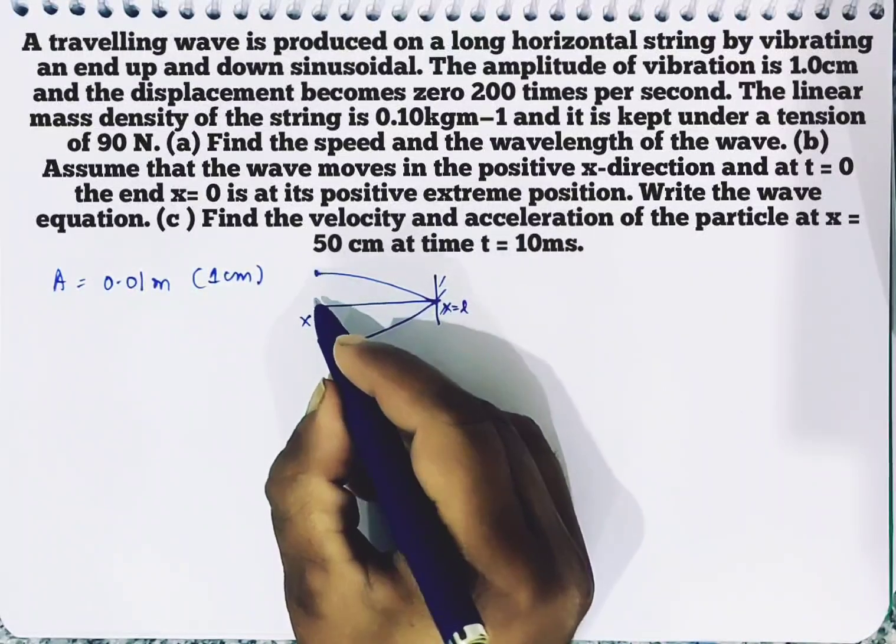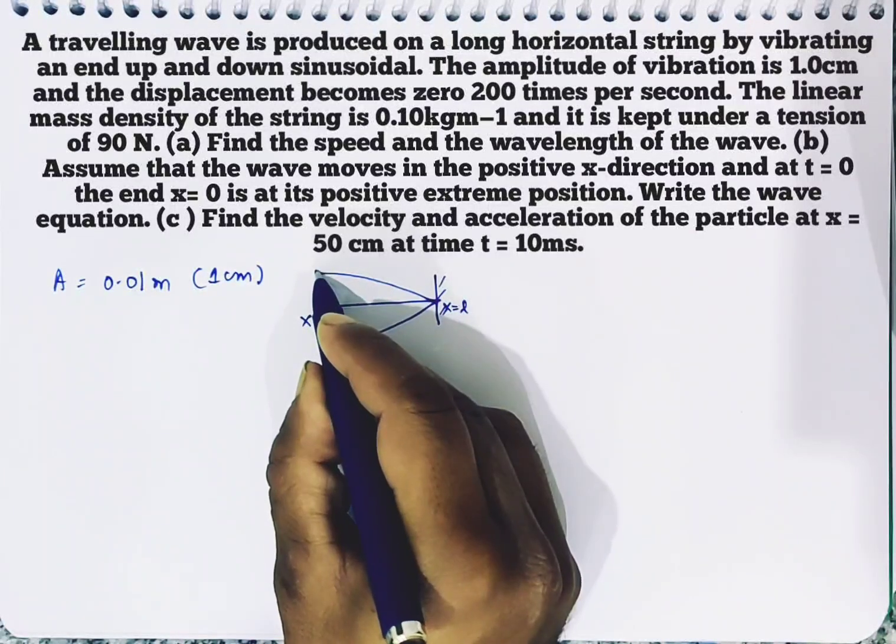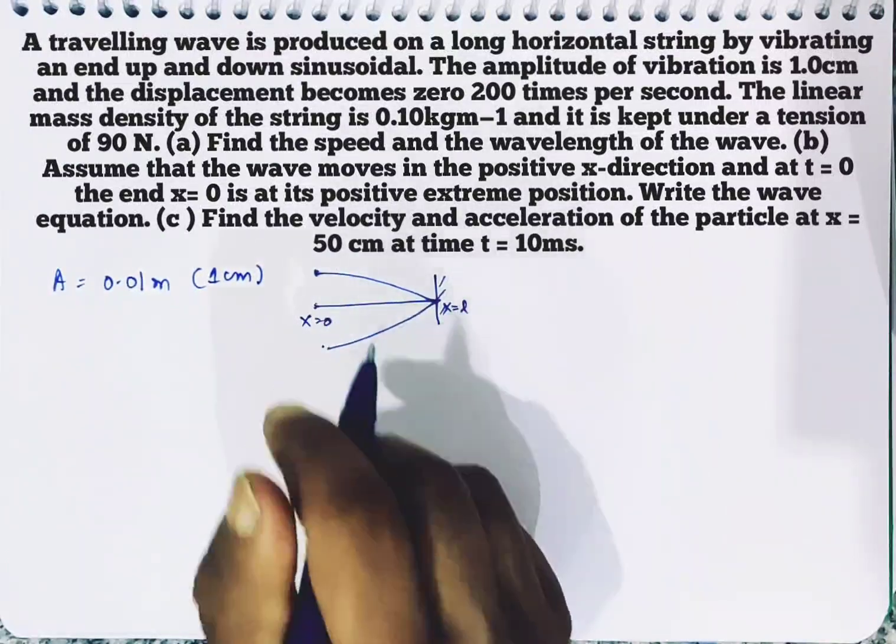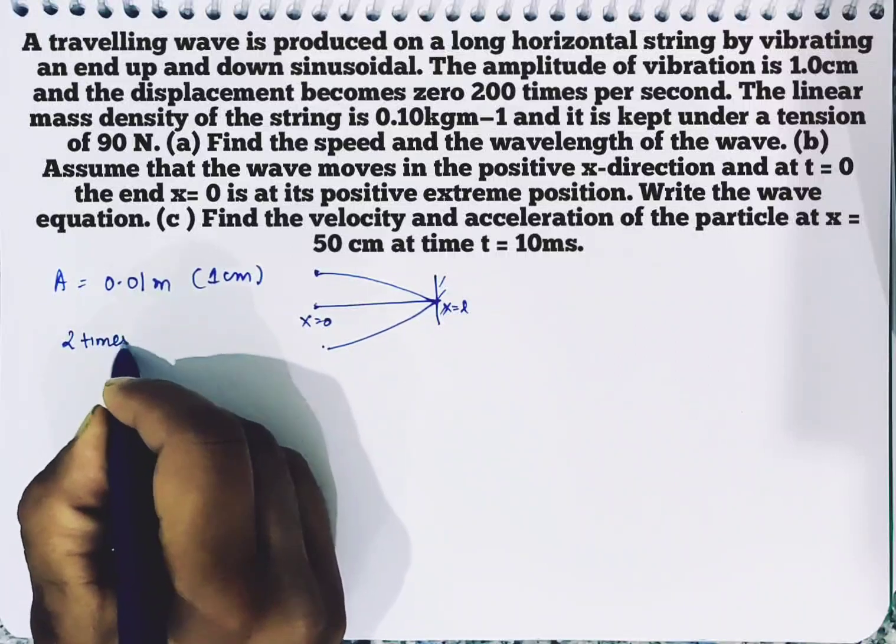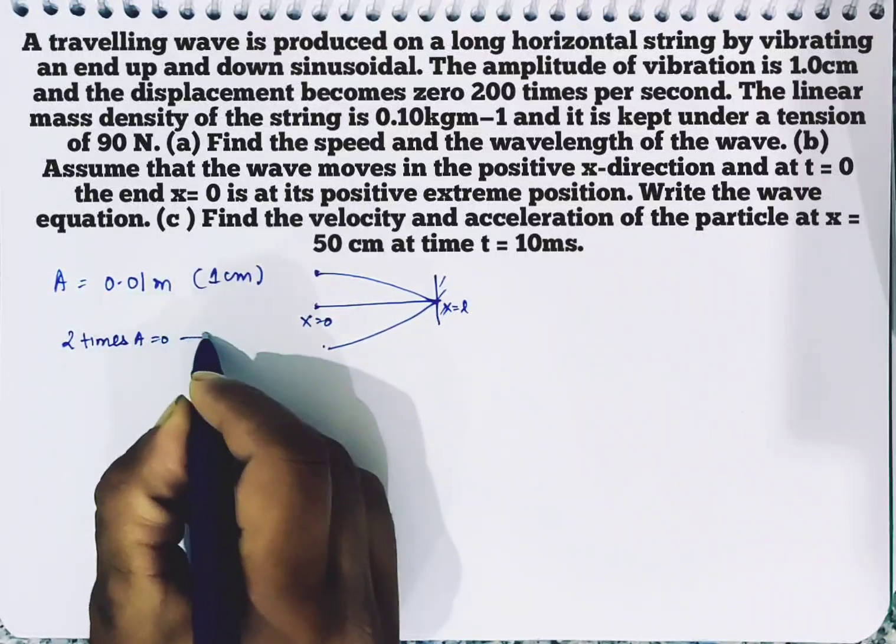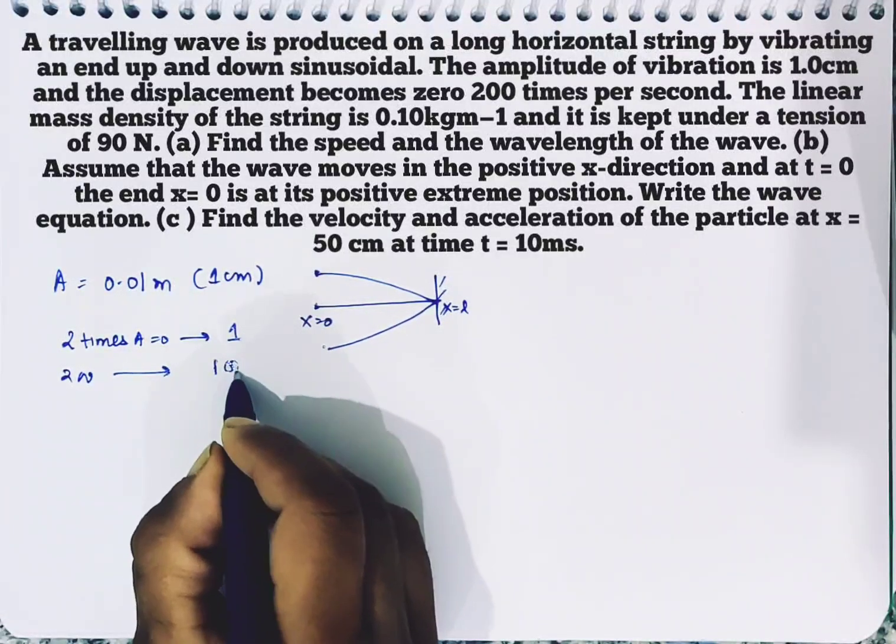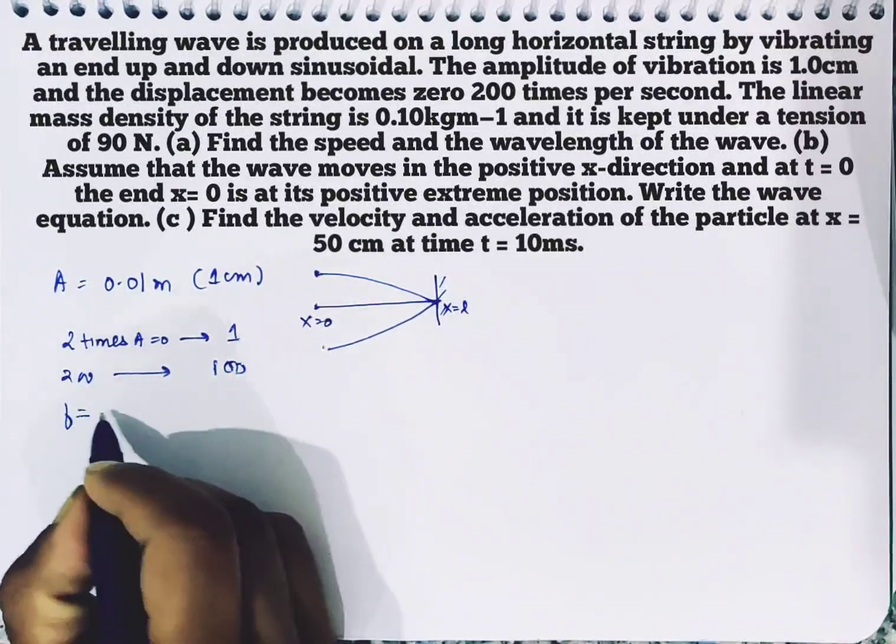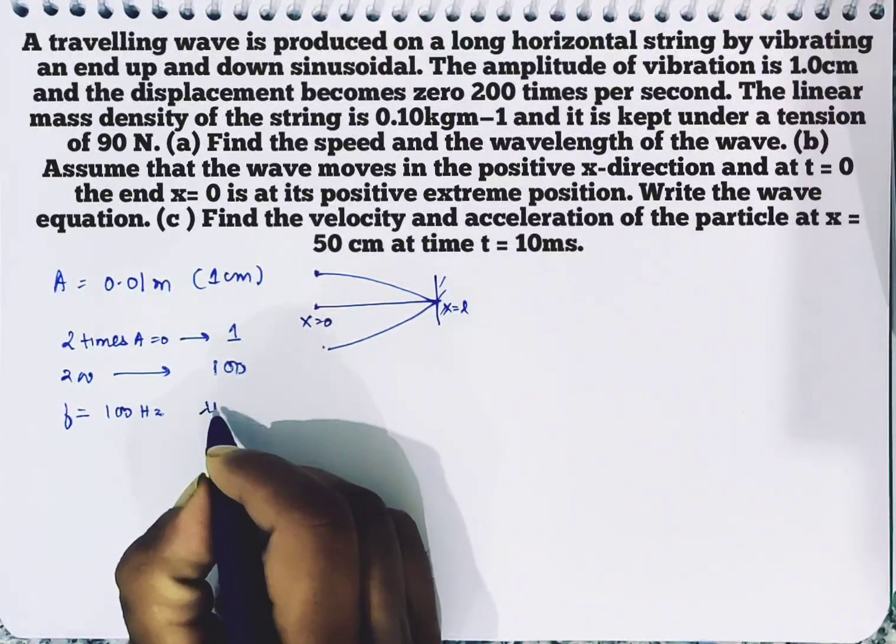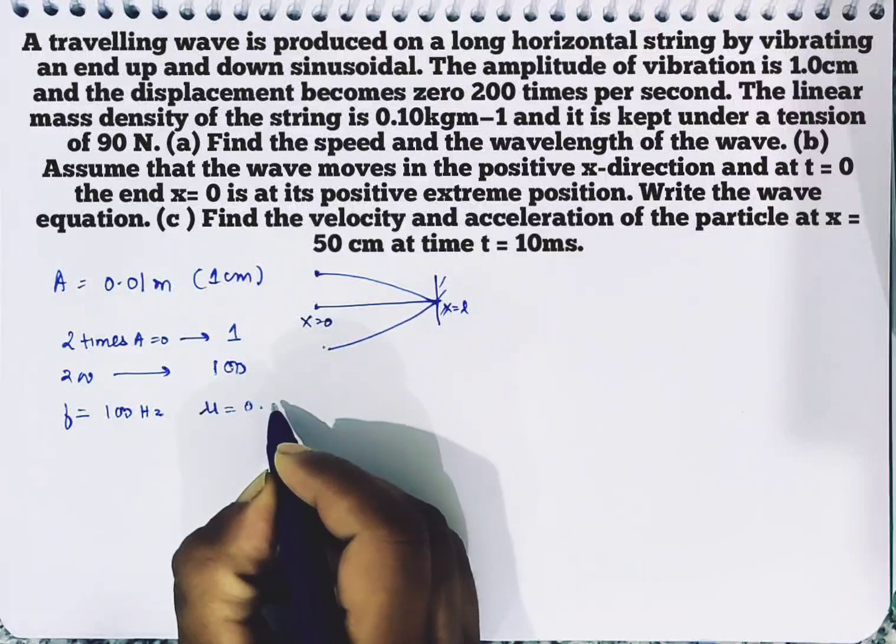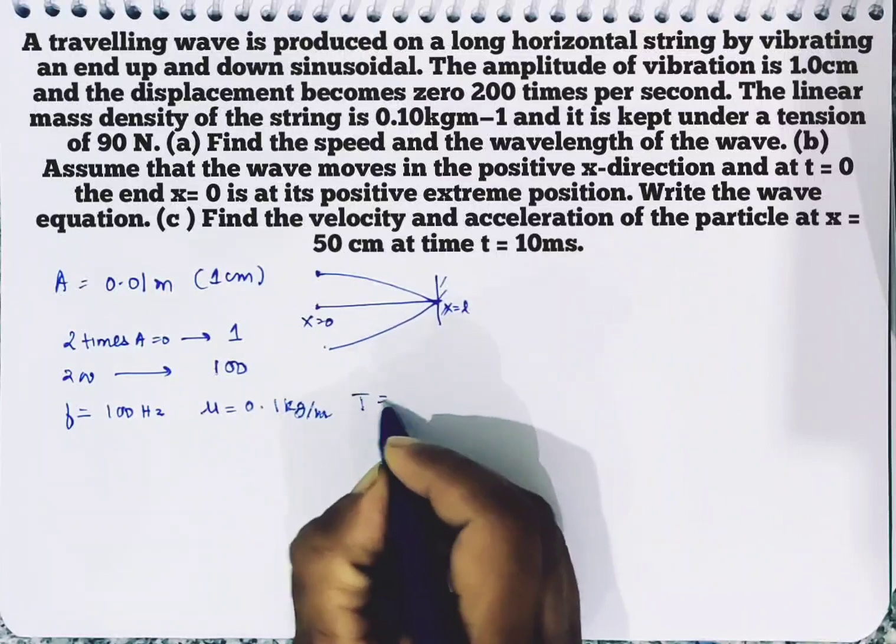As the displacement is zero, then amplitude, then amplitude is 2 times, then amplitude is zero, then the oscillation is 1 time. So from this way they have shown the frequency is 100 Hz. Now this is the data and we have mu which is 0.1 kg per meter and tension which is 90 Newton.